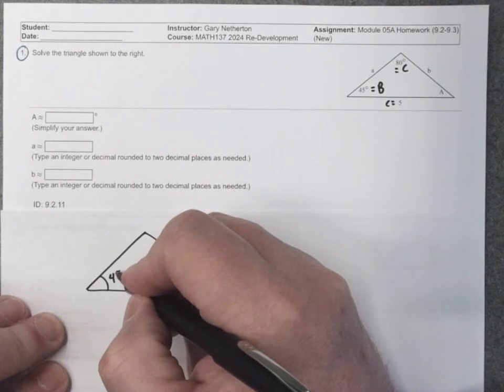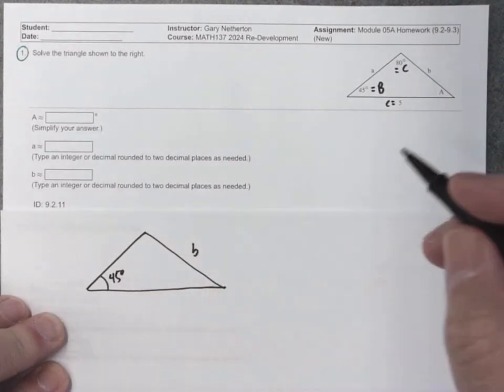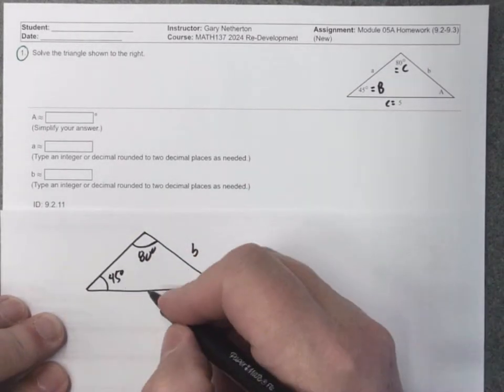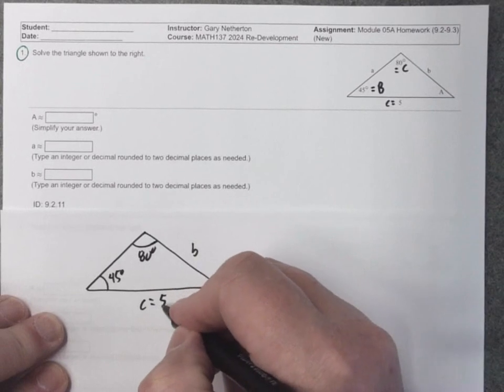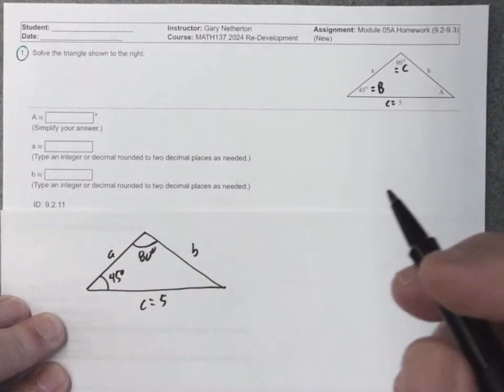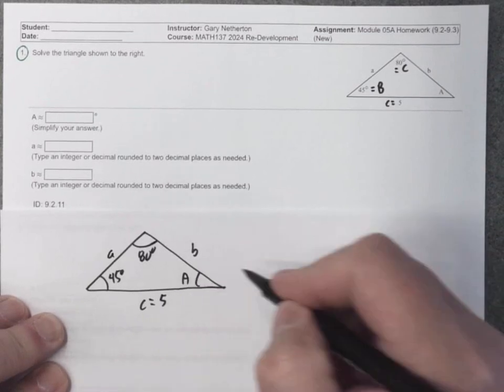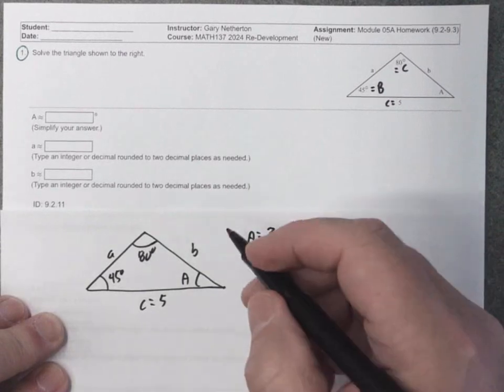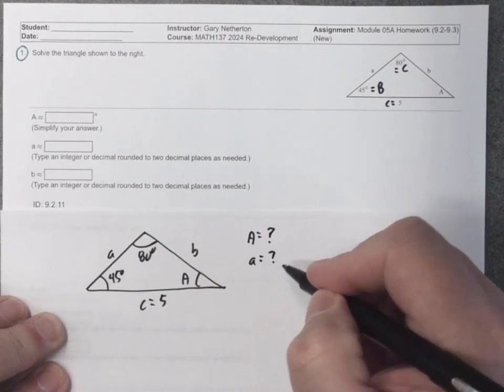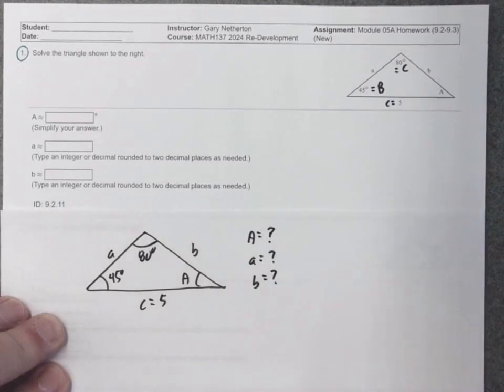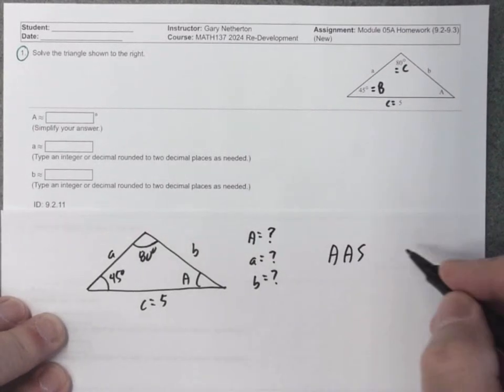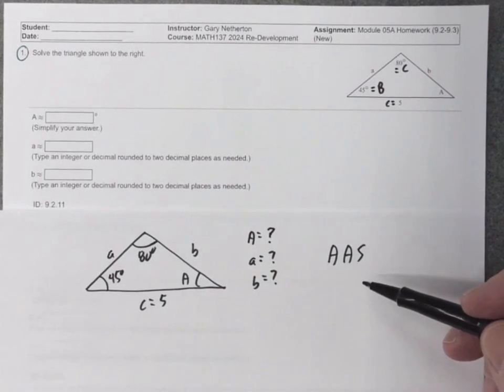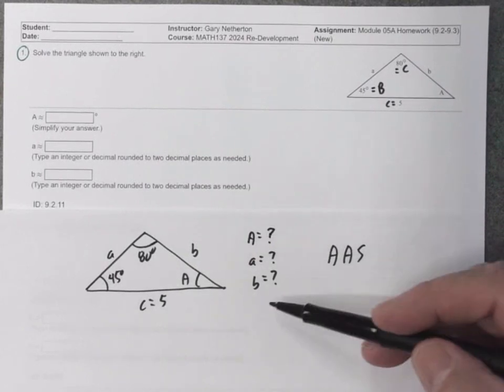Let's draw the triangle and then we can start working. So this is 45 degrees angle B, side B. This was 80 degrees angle C. I'll write down here, side C is 5. And this is side A and angle A. So the three things we want to determine are angle A, side A, and side B. This problem is one that we call angle angle side because they've given us two of the angles and one side.